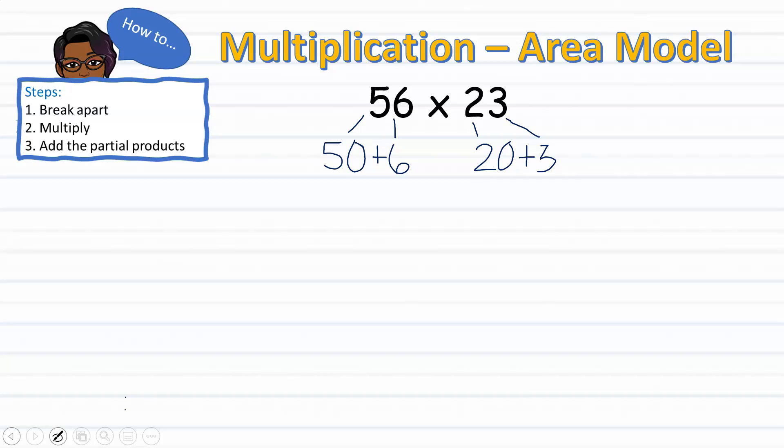I will set up my multiplication area model. As we can see here, it is obvious as to why some people call the area model the box method. The number of parts that the box is broken up into depends on how the factors were broken up.